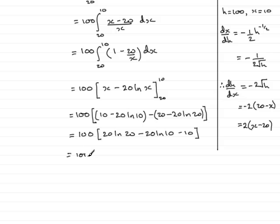So I have the 100. And in here we've got 20 as a common factor. And we have the natural log then of 20 minus the natural log of 10. Which is the same as the natural log of 20 over 10 by the subtraction rule for logs. So we have that. And then minus 10 on the end.